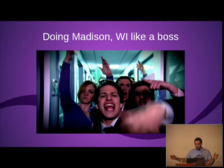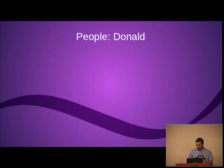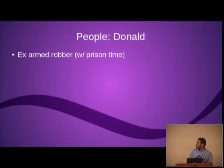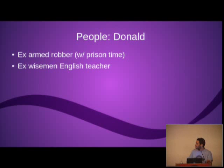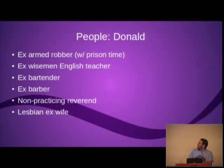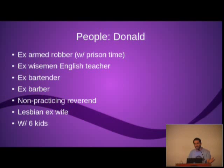So I've got to do this pretty quickly. This is basically the stuff I did this week. First of all, I met a lot of people. I met Donald. Donald's my roommate. Donald's an ex-armed robber. He did prison time. He was in a gang. At 15 he went to prison. That's why he moved to Madison. He's actually the nicest person I've ever met and I spoke to him as much as I could. He used to teach English, used to be a bartender, of course a barber. He's a reverend and he has a lesbian ex-wife and they have six kids. I love that sentence - she decided that she's attracted to women. He was like, what do you mean? We have six kids! I don't want to give a bad impression of Donald. I loved that guy. He was one of the most interesting and nicest people I've ever met.